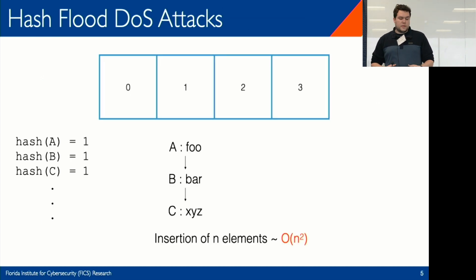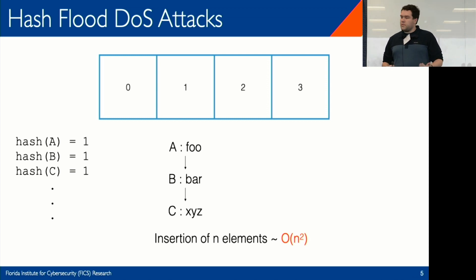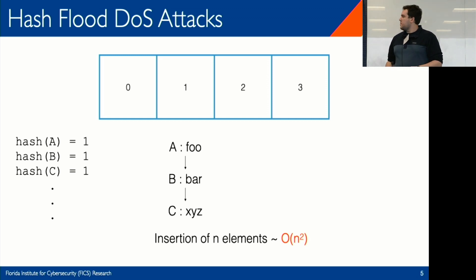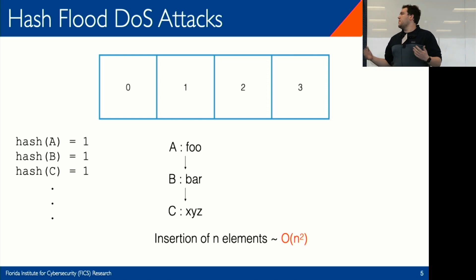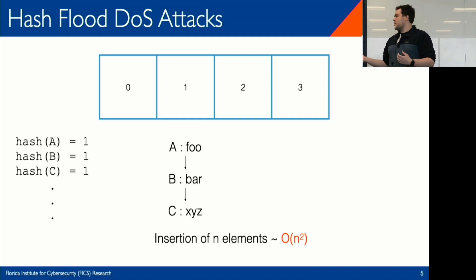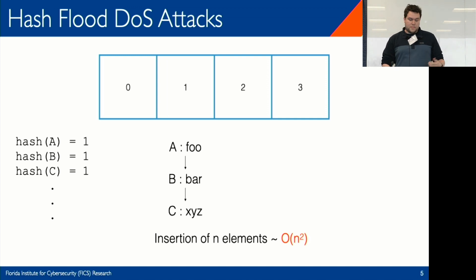You find a collection of data points such that they all hash to the same bucket. Hash tables have O(1) expected time on insertions; if you insert n elements your average case is O(n). But with this attack, you guarantee that your average case is now quadratic. This attack has detrimental real-world effects. The original paper by Crosby and Wallach showed they could cause the Bro Network Monitoring Tool to drop all traffic for long periods just by doing this.